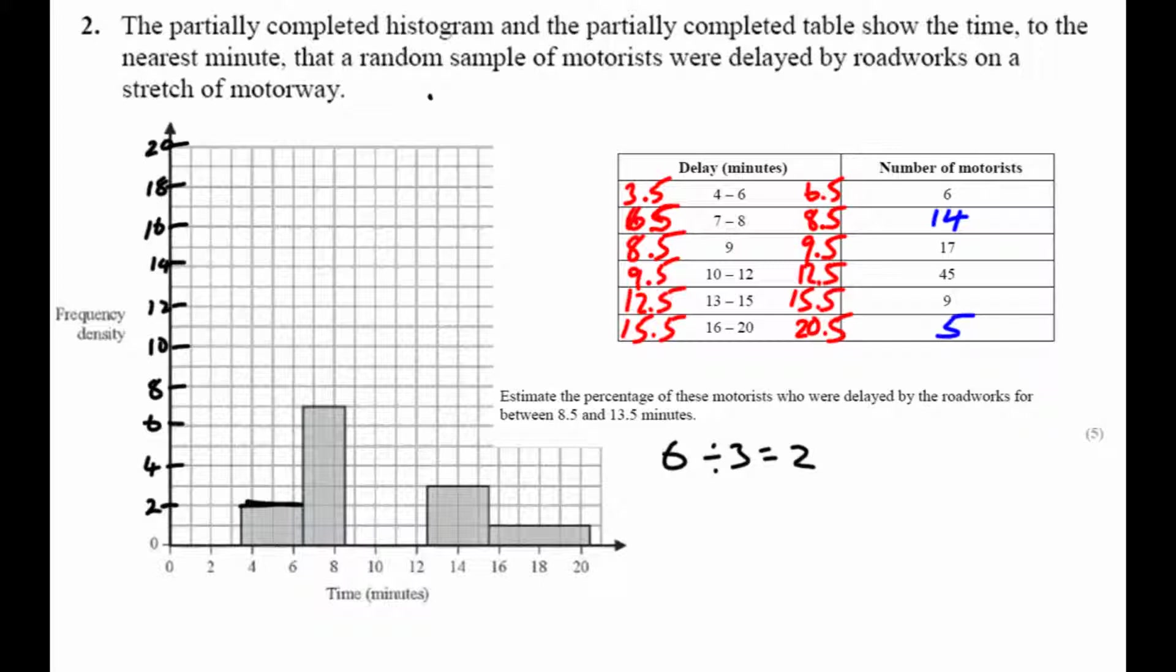All right, so now I actually do have all of the values there. I can find out how many motorists were involved altogether. A quick count gives us 96, there's 96 motorists altogether. Okay, and back to the question: I was asked what percentage are between 8.5 and 13.5.